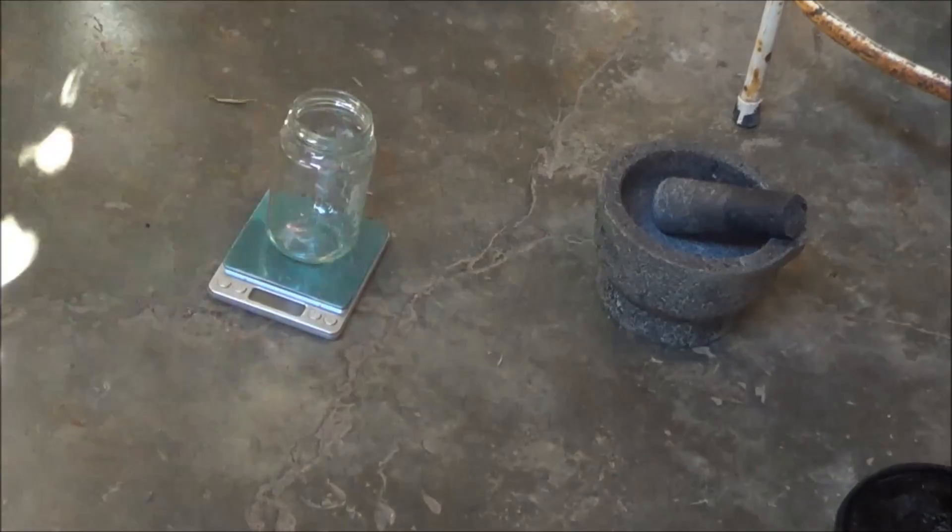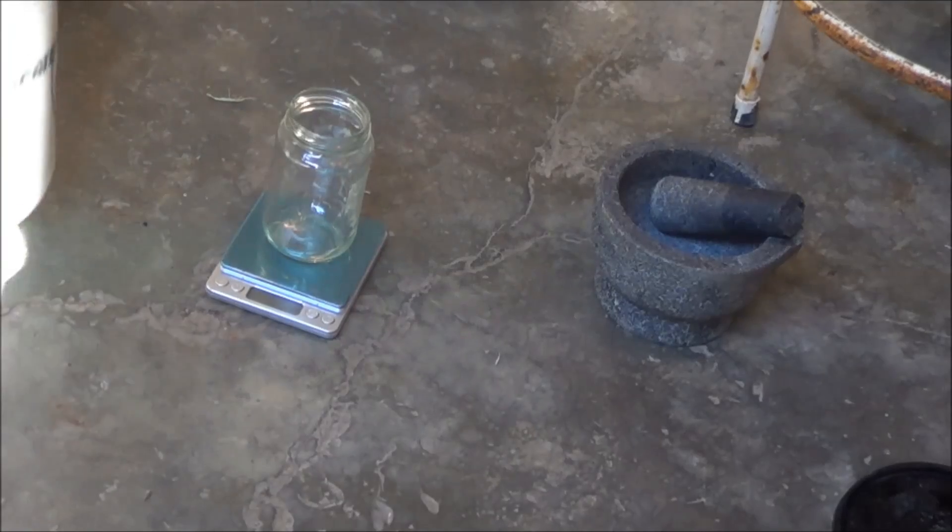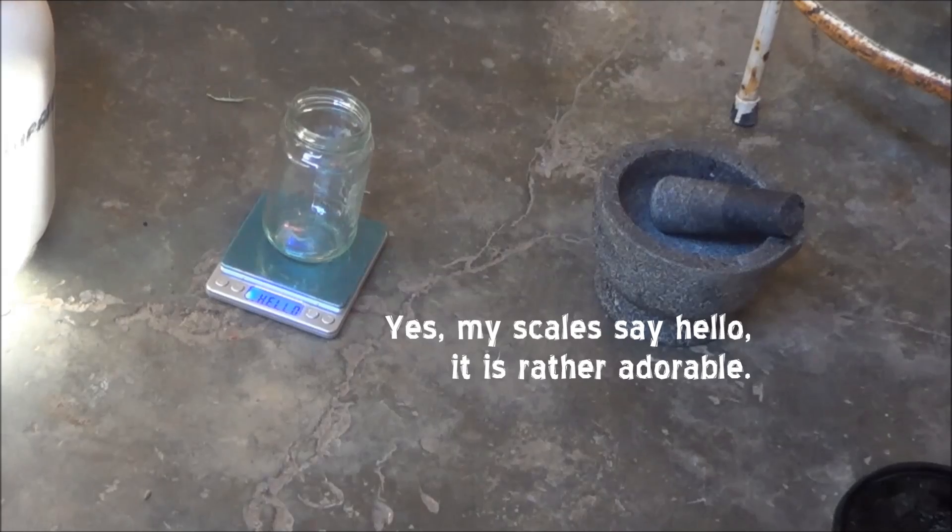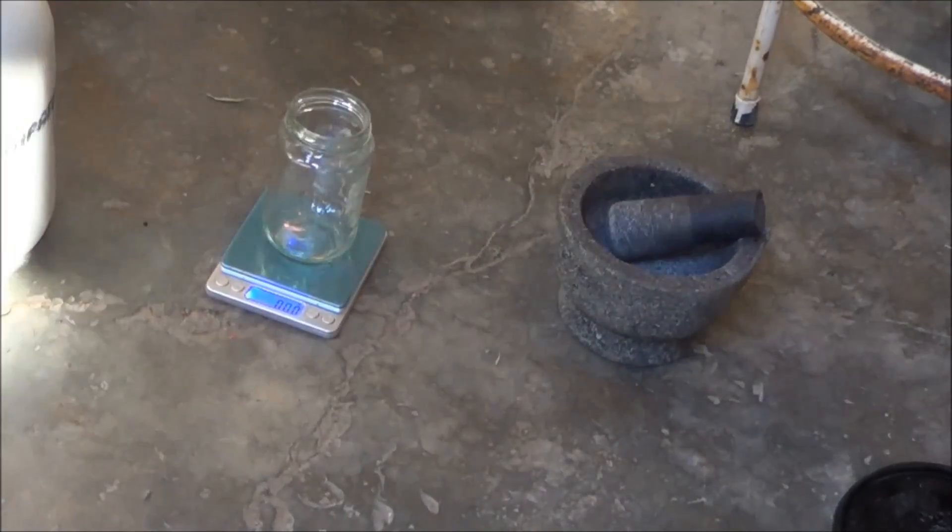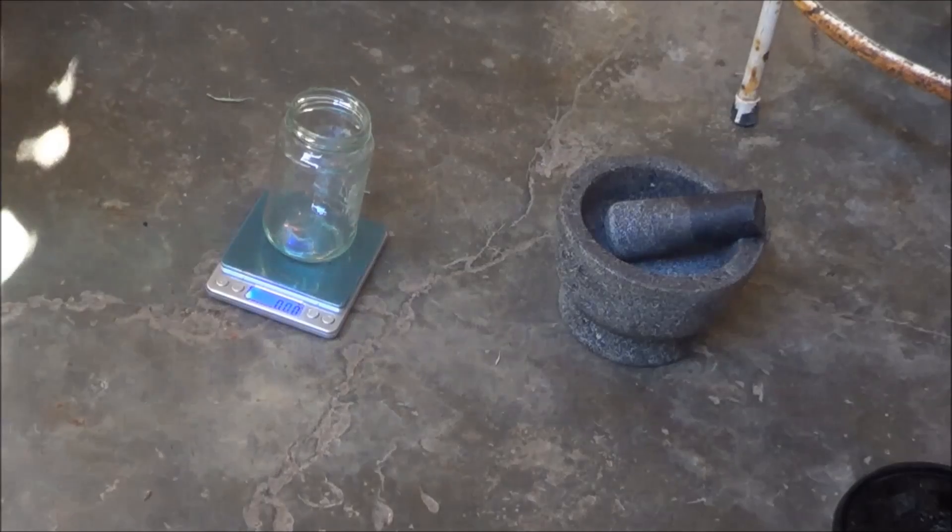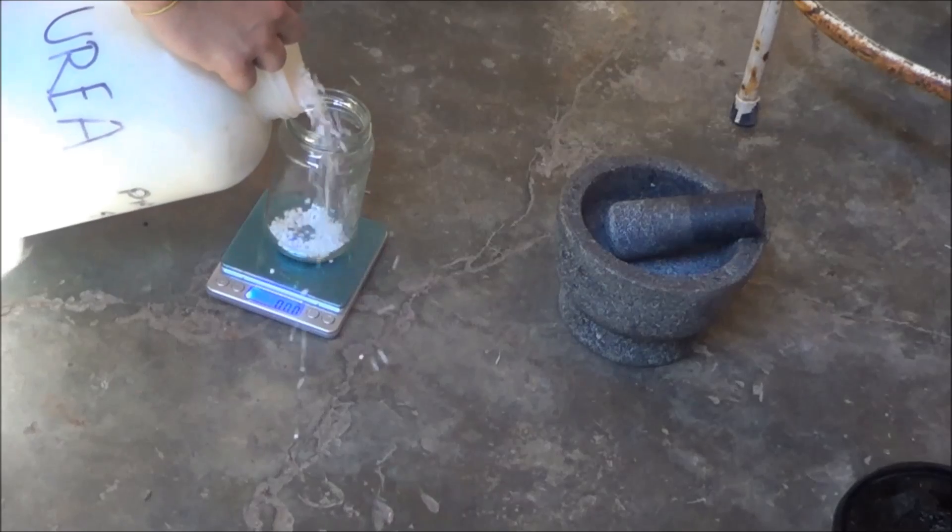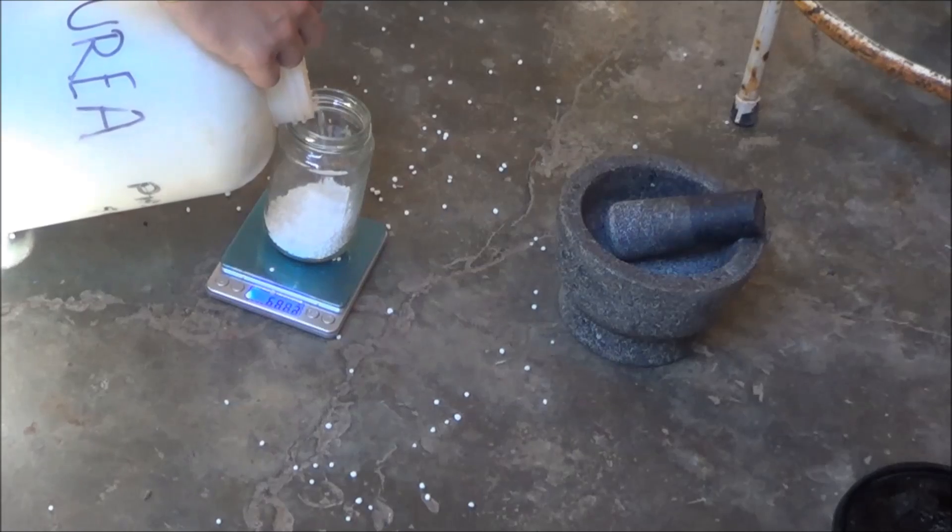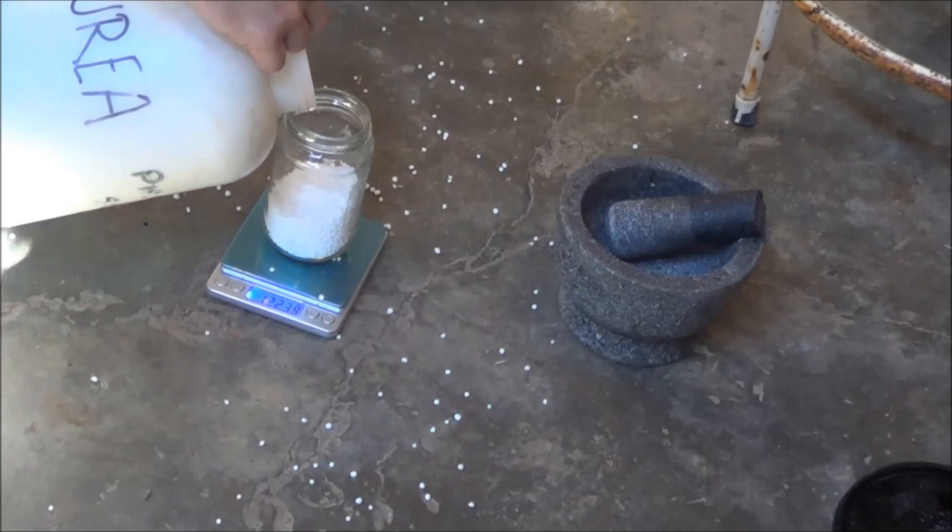Okay, so we're going to be doing this on twice the scale that I did it previously. Previously I used 180g urea, so if my maths is correct, we're using 360g of urea. I'll weigh that out and then I get to the joy of crushing it up. This is never going to work. Oh no, this is going to be a lot of urea.